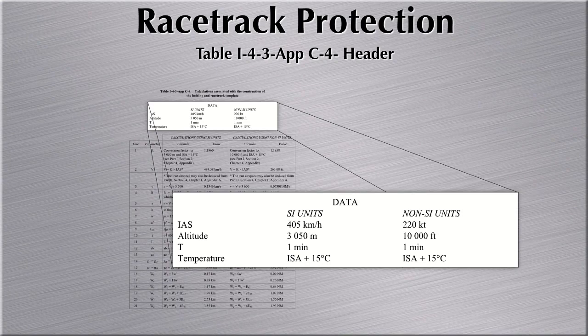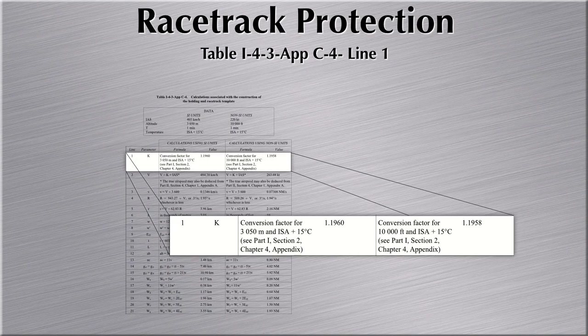The header of the table describes the scenario that we're looking at. I will read from the right side only to give you non-SI values of the calculation. So this scenario is about indicated airspeed 220 knots at 10,000 feet, one minute outbound leg, and ISA plus 15 degrees temperature. Line one gives you the conversion factor for calculating the true airspeed as per part 1 section 2 chapter 4 appendix of PANS OPS. You could also opt to use the formula presented in that same appendix to calculate the true airspeed.